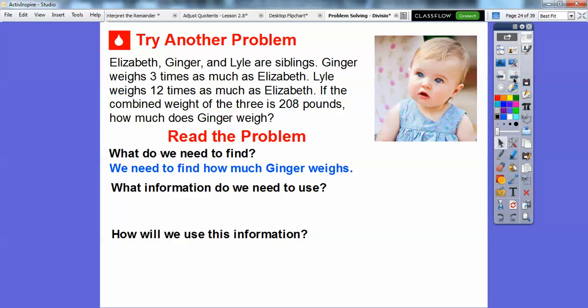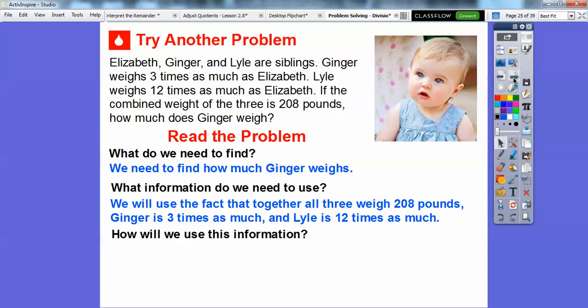We need to find out how much Ginger weighs and what information will we use. We'll use the fact that together all of them weigh 208 pounds and Ginger is three times as much as Elizabeth and Lyle is 12 times as much as Elizabeth. How are we going to use this information?